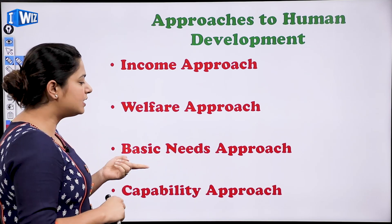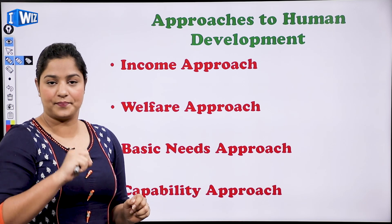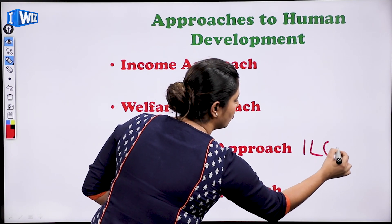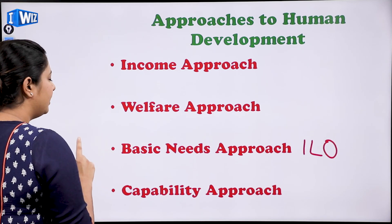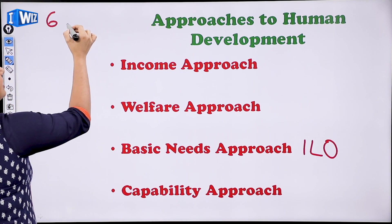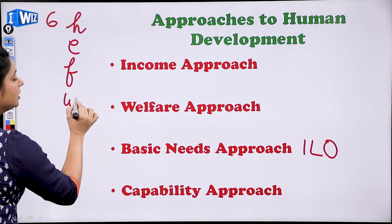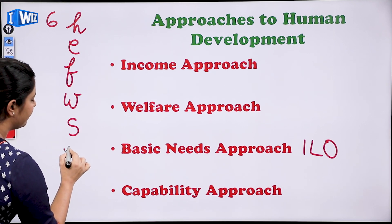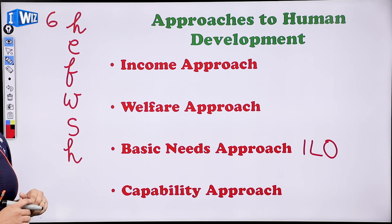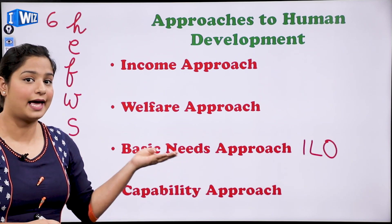Next is the basic needs approach. This approach was given by the ILO — the International Labour Organization. They identified six basic needs: health, education, food, water, sanitation, and housing. If people in a country have access to these six basic needs, that means the country is well developed.